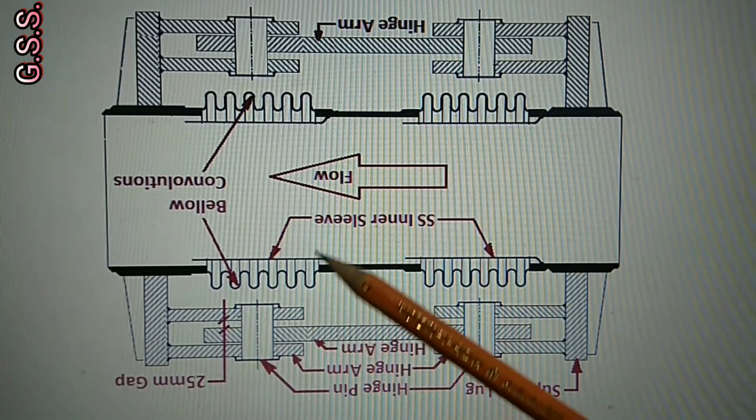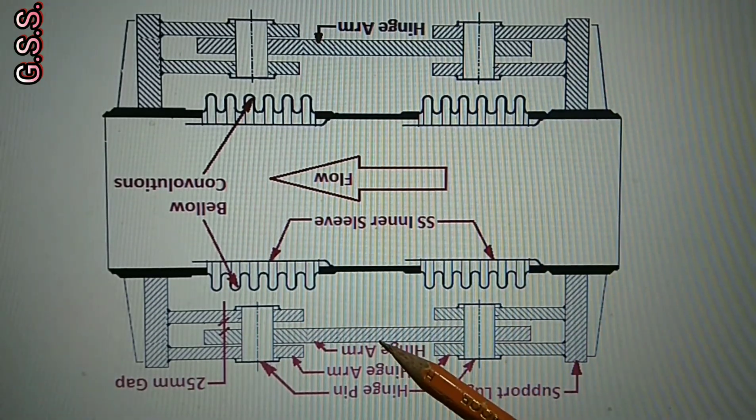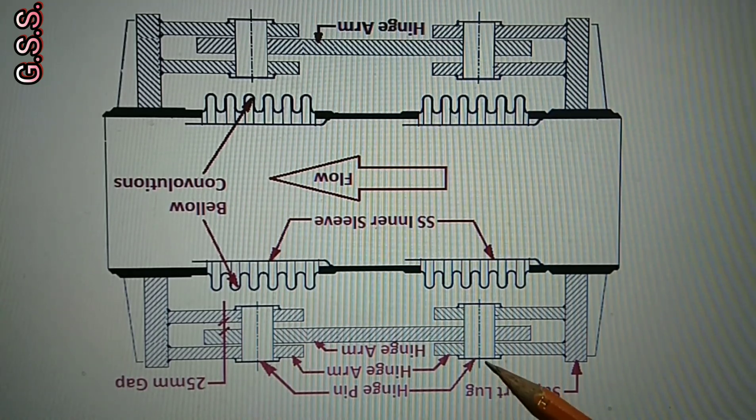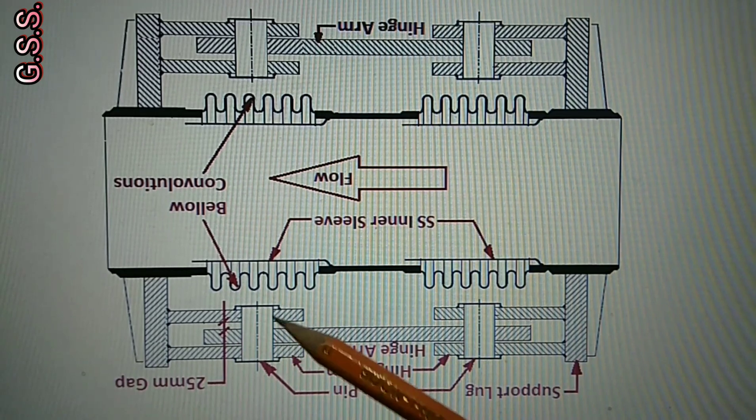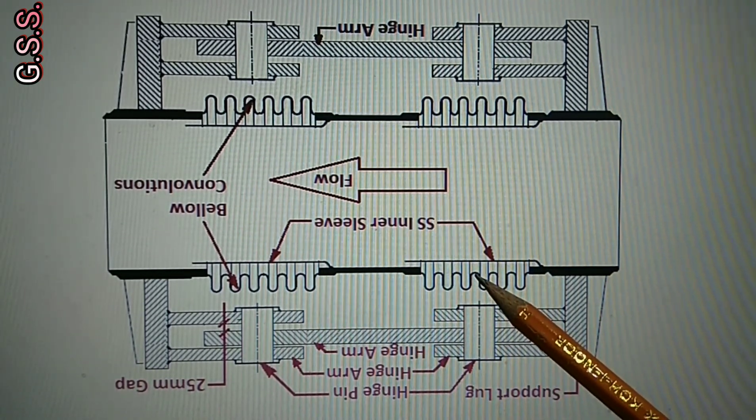Two sets of hinge arms are there on either side of the bellows connected with hinge pin. That's why the term hinge is used. Two sets of SS bellows convolutions are there. That's why it is called universal.